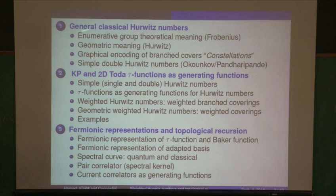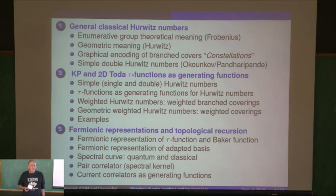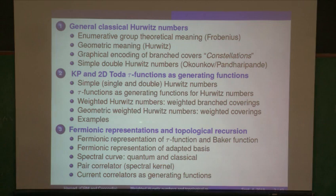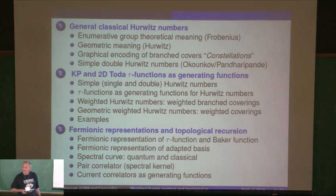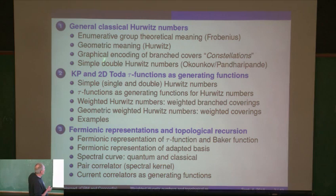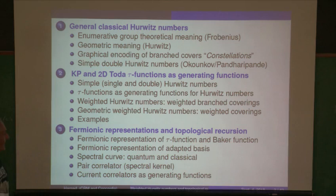Here's the outline. I'll remind you what Hurwitz numbers are — not assuming everyone's familiar — and I'll remind you of the old work of Okounkov and Pandharipande. They were the ones who first connected it up with KP theory and came up with a 2D Toda tau function, which was the generating function for simple double or single Hurwitz numbers. Everything in the first 25 minutes will be a generalization of that work.